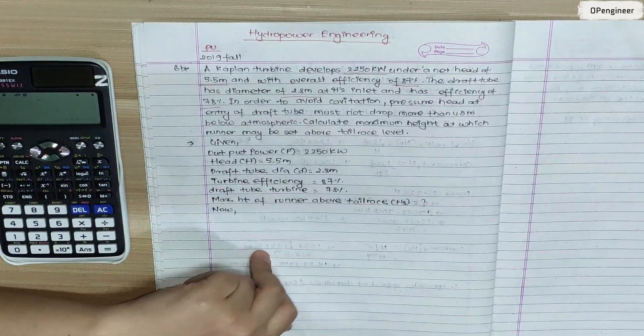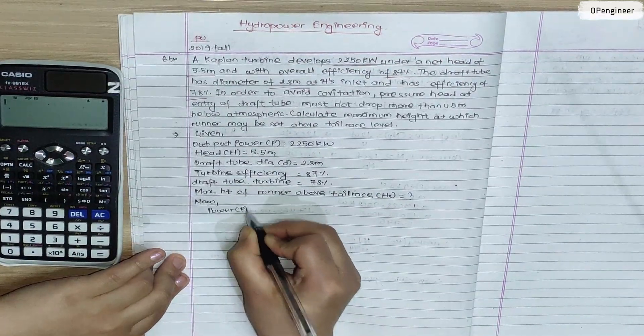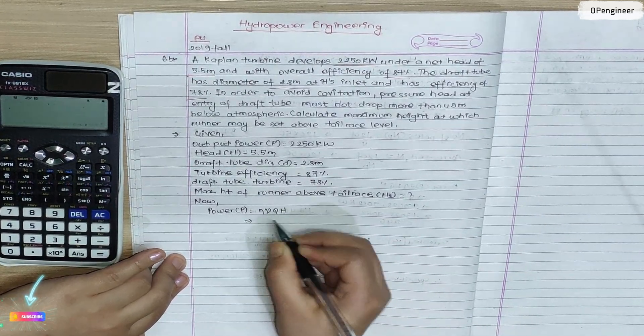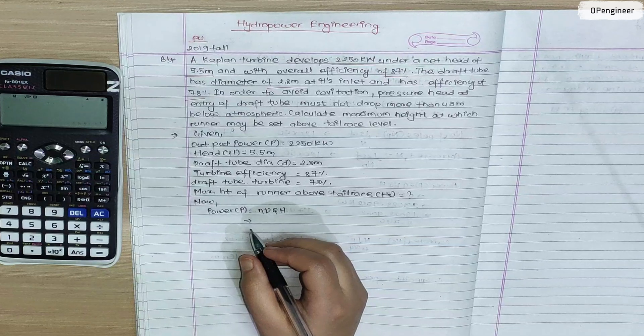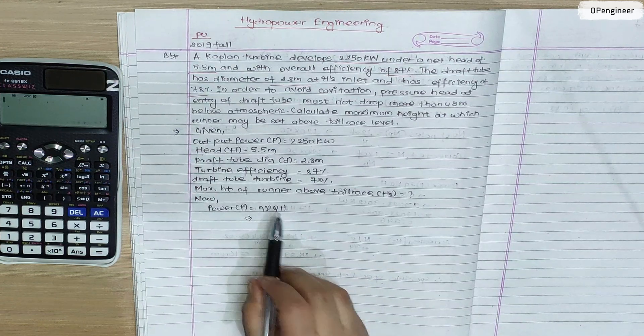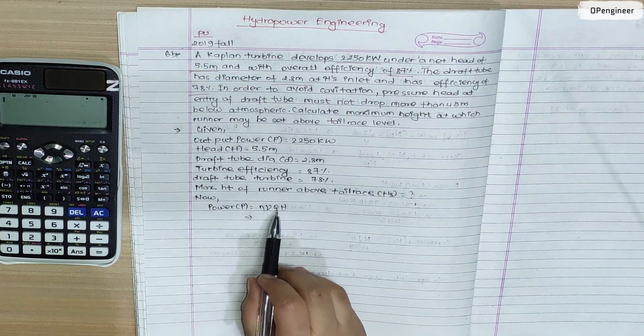When we start to calculate, we use the power formula. This is the formula: P = γQHη₀. The overall efficiency is 87%, so 2250 = 9.81 × Q × 5.5 × 0.87.